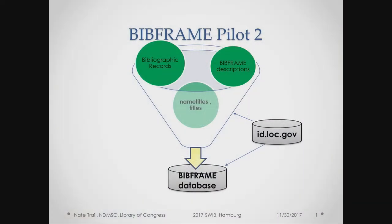In order to get things started, we had to build a BibFrame database so that our catalogers could catalog against it. That consisted of all of the name titles and title authority records in our LCNAF at id.loc.gov as converted to BibFrame, plus a complete dump of our ILS records — bibliographic records — converted to the new BibFrame 2 vocabulary, and then also native BibFrame from our BibFrame editor as the catalogers code into it.